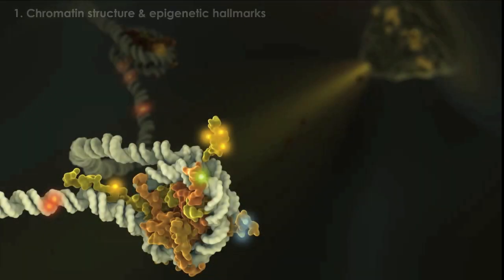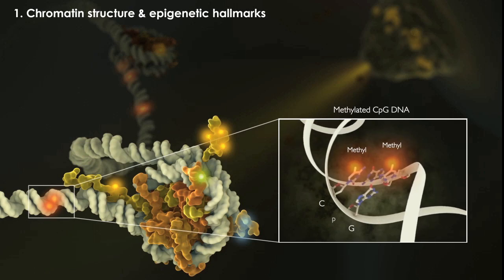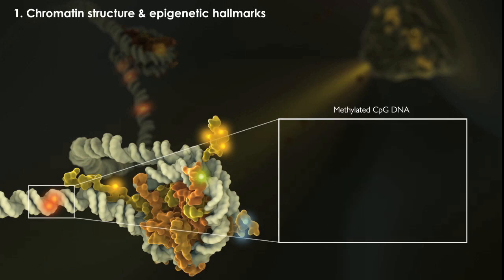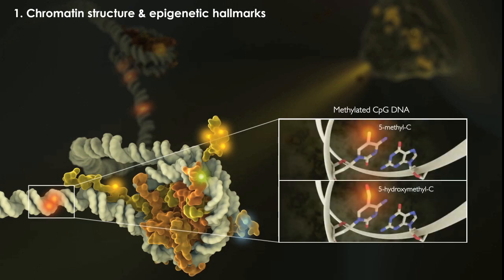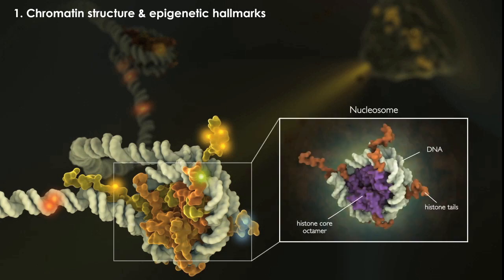Epigenetic regulation encompasses a number of different modifications to chromatin. These include methylation of the DNA on cytosine bases, a modification that can further be oxidized, as well as modification of the histone tails that emanate from the core of the nucleosome.